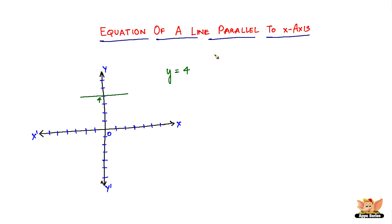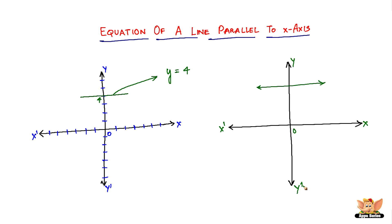That is how you write the equation of a line that is parallel to the x-axis. I'm sure you've already guessed what the equation of a line parallel to the y-axis will be — we'll look at that in the next video. Generally speaking, if the distance from the x-axis to the line is B, then the value of the y-coordinate is B, and the equation is Y equals B. For any line parallel to the x-axis on the positive side of the y-axis, the equation is Y equals B.